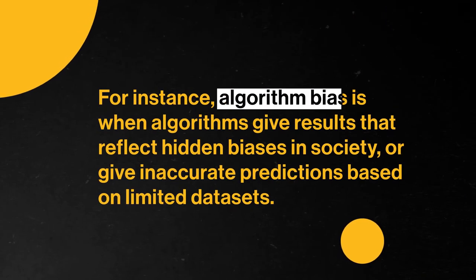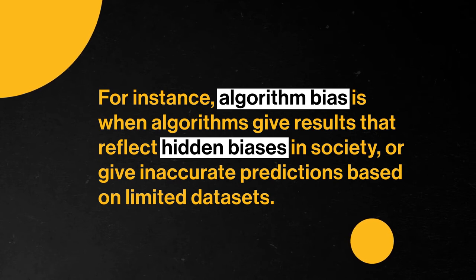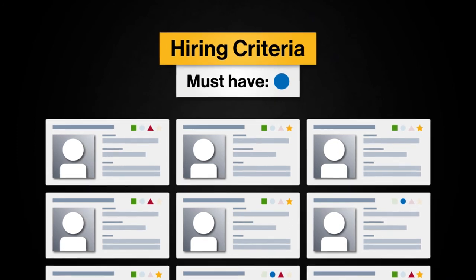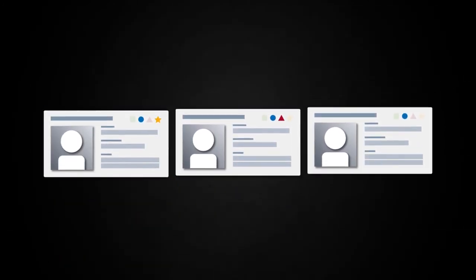Algorithms can also take too much or too little information into account when making a decision. Algorithm bias is when algorithms give results that reflect hidden biases in society, or give inaccurate predictions based on limited data sets. We all have bias of some sort, and bias isn't inherently bad, but it can lead to certain groups of people being treated unfairly and serious discrimination problems. So if the data used to train a hiring algorithm only includes a limited type of people, the algorithm might discriminate against candidates with different backgrounds, even if a human hiring manager would see they are qualified.